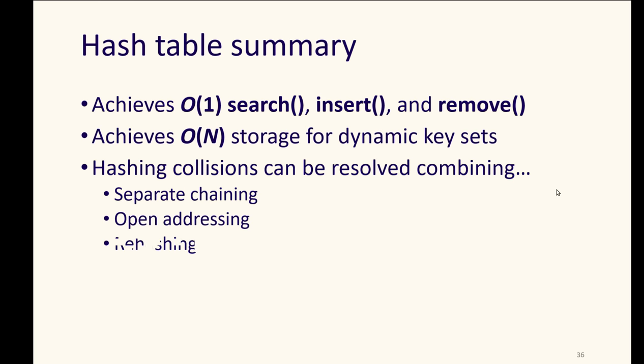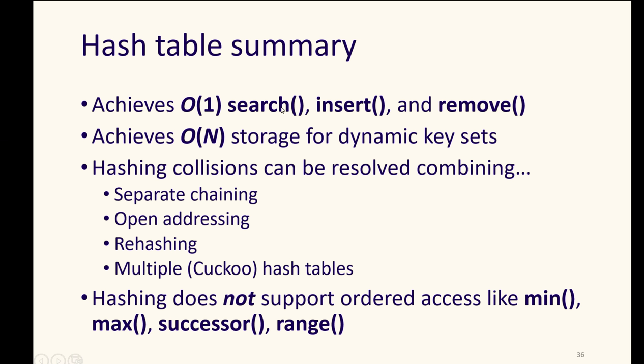So, hash tables can achieve O of 1 search, insert, and remove with some of those good schemes for them. And we can achieve O of N storage for dynamic key sets. Collisions can be resolved by combining different approaches, such as separate chaining or open addressing, or in other words, the bucketing versus using a different slot within the hash table. We can grow them by rehashing, and we can use multiple hash tables, like in the Cuckoo scheme, to allow for more distribution and to be able to sort of shift things between those hash tables.